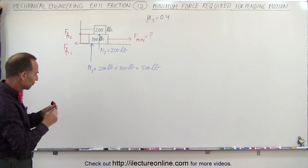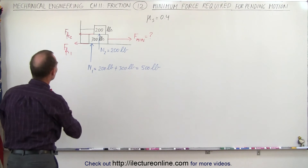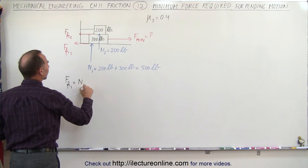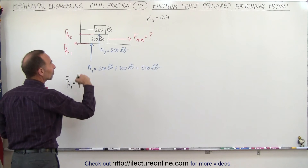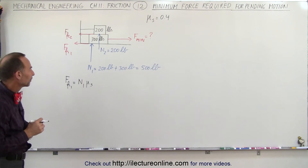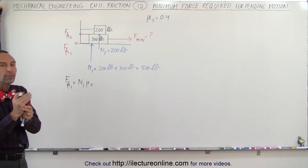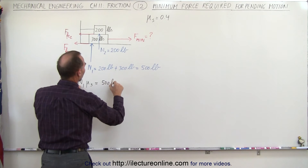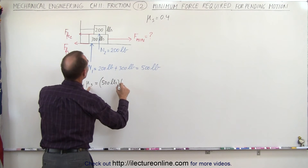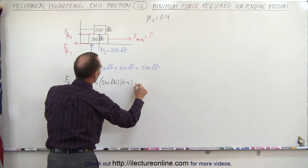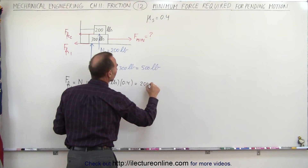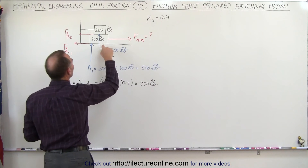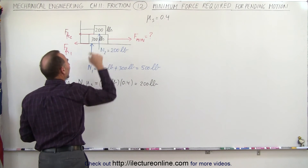From that we can find both friction forces. Friction force 1 is equal to the normal force times the coefficient of friction — in this case the static coefficient, because nothing is moving. We want to find the force up to the point where everything will begin to move. So this is equal to the normal force of 500 pounds times the coefficient of friction of 0.4, which gives 200 pounds — the friction force between the bottom block and the ground.